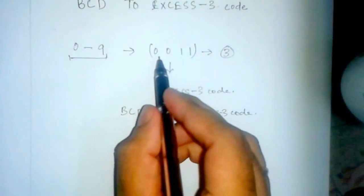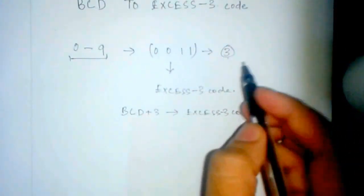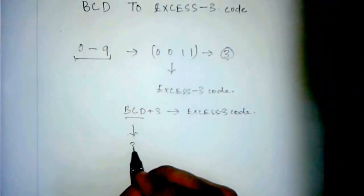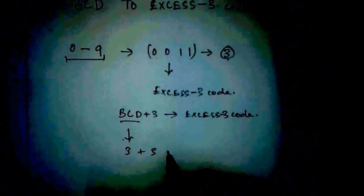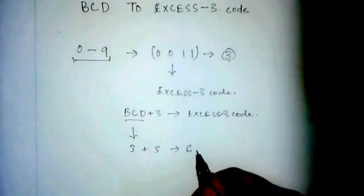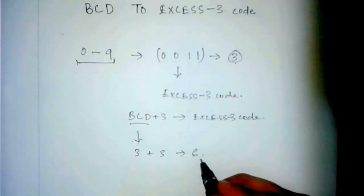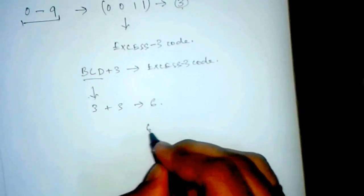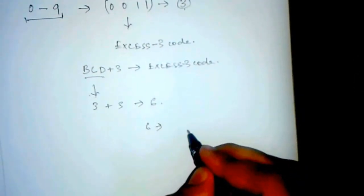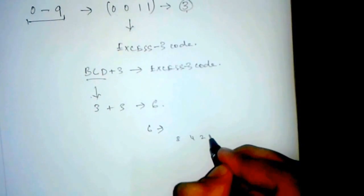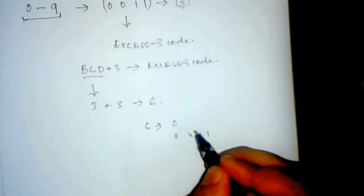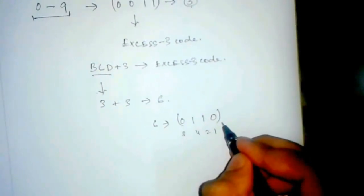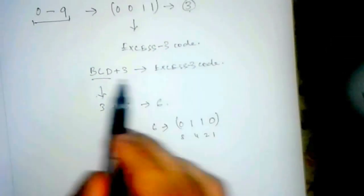For example, here is 0011, which is 3. The BCD number is 3, and 3 plus 3 gives us 6. So the XS3 code will be 6, and the binary equivalent of 6 is 0110. This is the XS3 number of the BCD code.